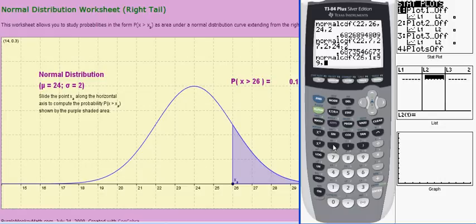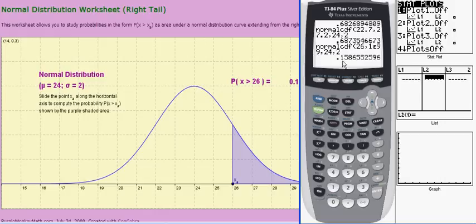But let me finish this computation. I'm going to go ahead and put the mean and standard deviation in and then press enter, and you get that same probability about 15.9%.